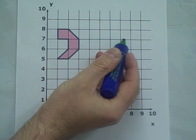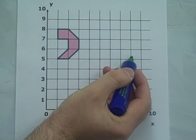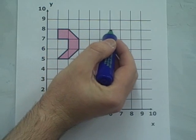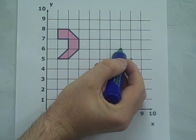1, 2, 3, 4, 5 right, 1, 2 down. 1, 2, 3, 4, 5 to the right, 1, 2 down.